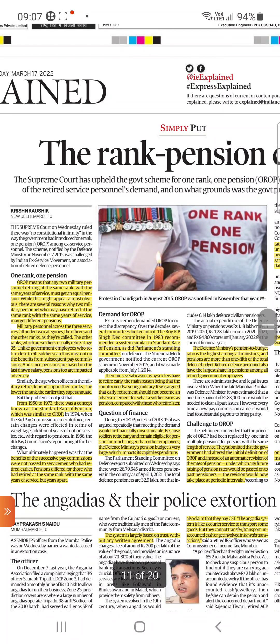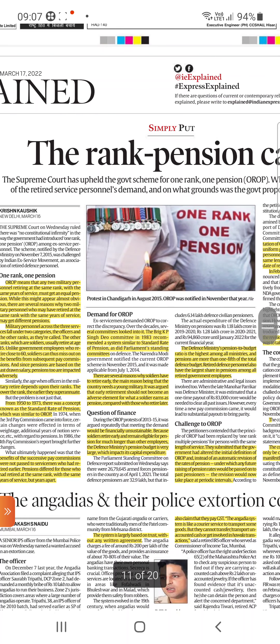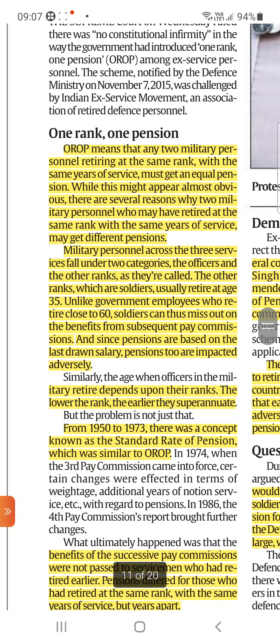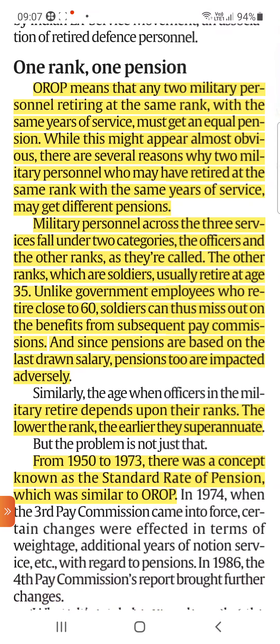The next article is about the One Rank One Pension case — the Supreme Court has upheld the government scheme for One Rank One Pension. One Rank One Pension means any military personnel retiring at the same rank with the same years of service must get equal pension. There are several reasons why two military personnel who retired at the same rank with the same years of service may get different pensions. Military personnel across the three services fall into two categories: officers and other ranks. Soldiers usually retire at the age of 35, unlike government employees who retire close to 60 years of age, thus missing out on benefits from subsequent pay commissions. Since pensions are based on last drawn salary, pensions too are adversely impacted.